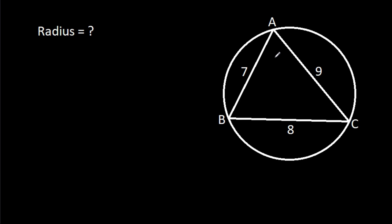In this video, we have been given a triangle ABC inside a circle, where AB is 7, BC is 8, and AC is 9. We have to find the radius of the circle.